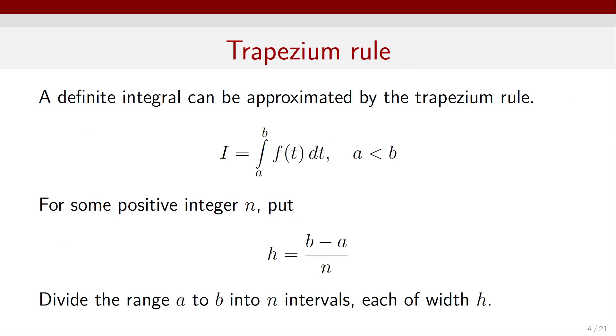Let's look at the trapezium rule or trapezoidal rule. A definite integral from a to b can be approximated by the trapezium rule, which is a second order rule. For some positive integer n, let's define the grid spacing h which is b minus a divided by n.